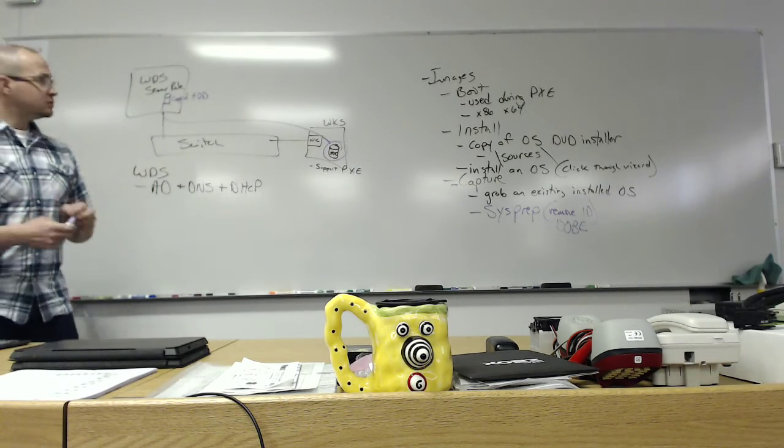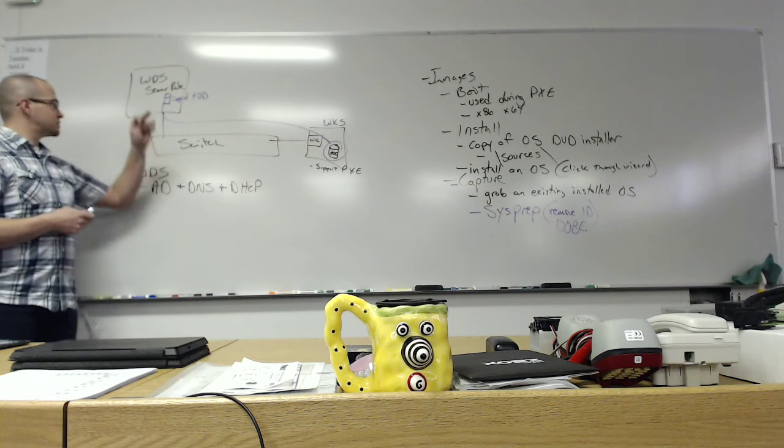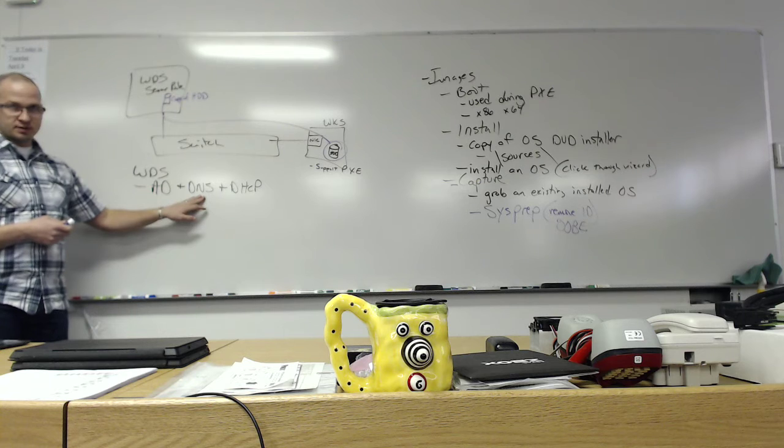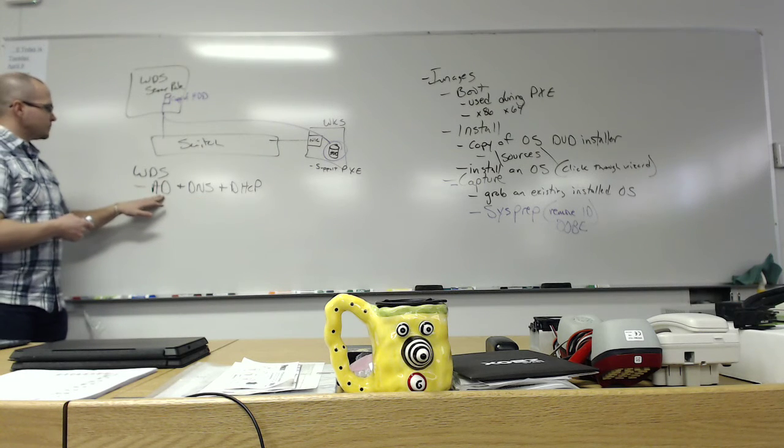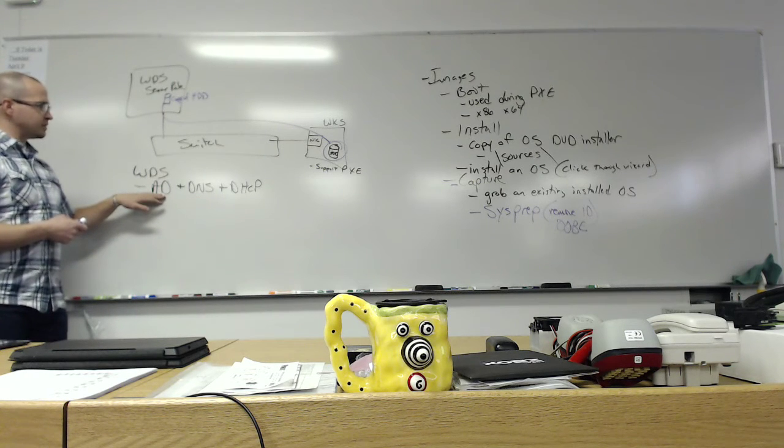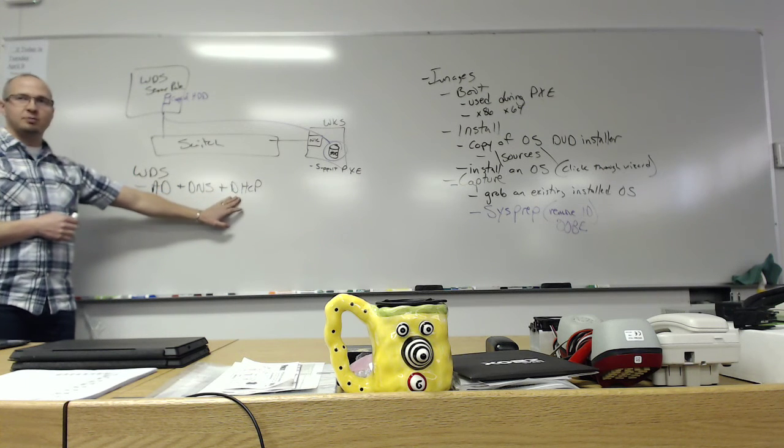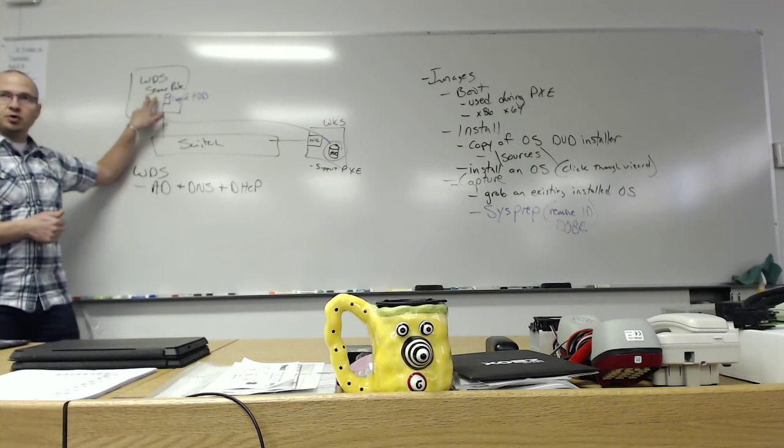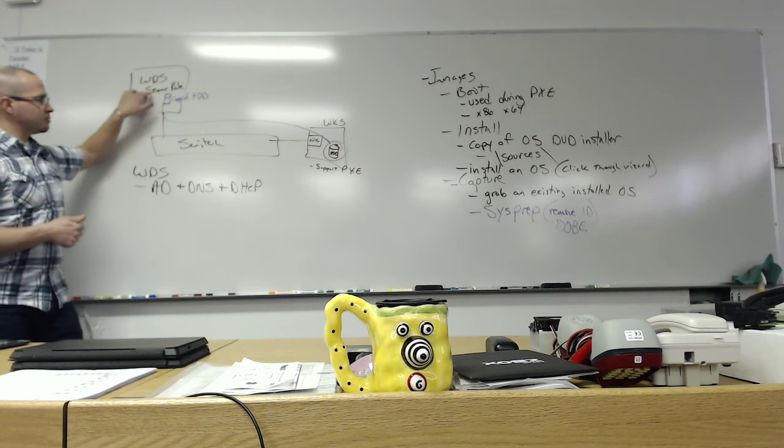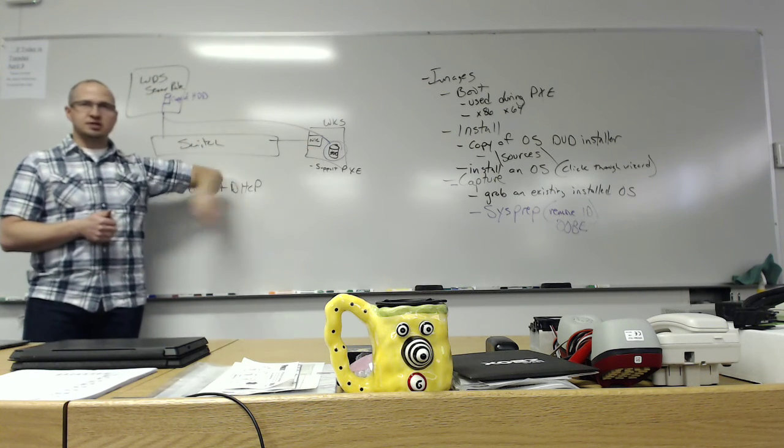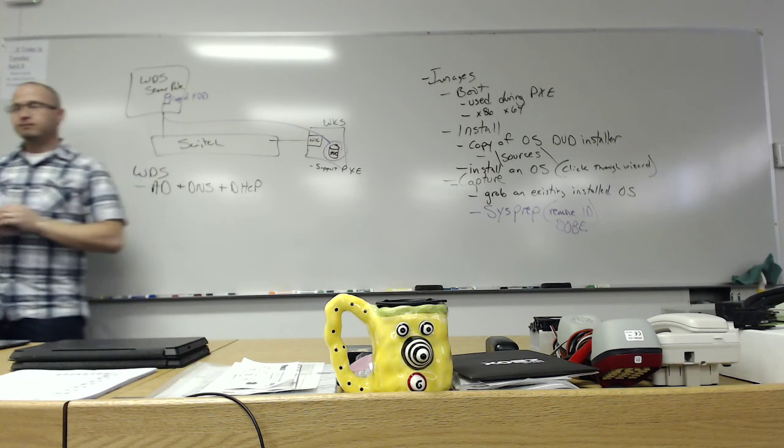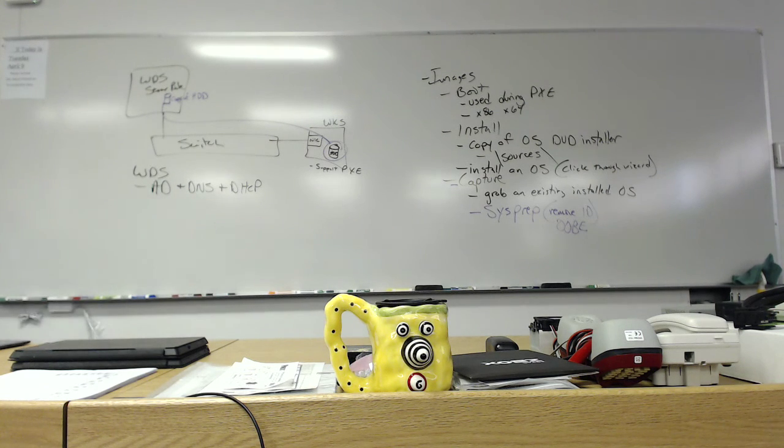So today what we're going to do is we're going to install the WDS service. It's going to use Active Directory, which of course needs DNS. It's going to utilize DHCP and make sure that we can hand out IP addresses and tell these clients where to download the boot image from. And then we're going to deploy the image, which is just a simple install image, just so we can see this process occur. Any other questions?